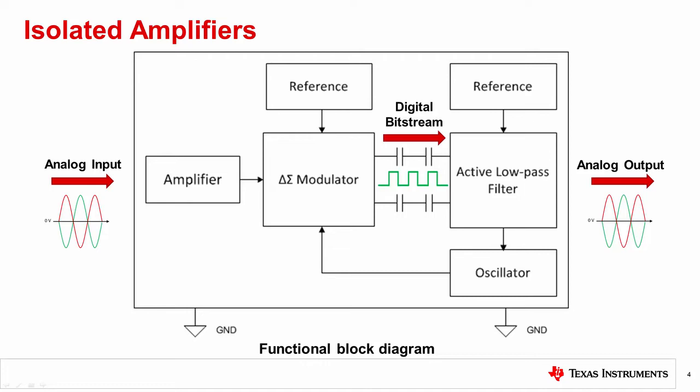Texas Instruments capacitive isolation technology offers two different types of isolation barriers: basic and reinforced. Basic isolation is implemented with a single capacitive barrier, while reinforced isolation uses two capacitive isolation barriers in series. For more information on types of isolation, please check our basic versus reinforced isolation Precision Labs video.